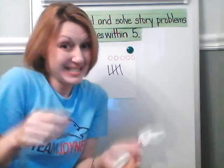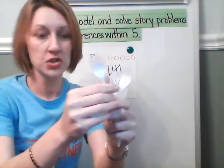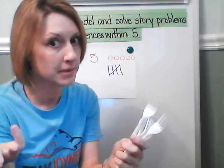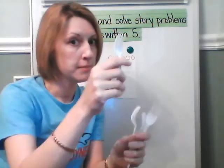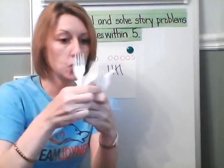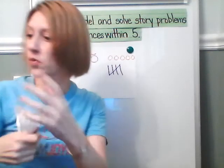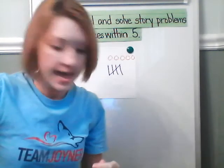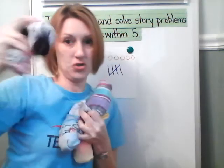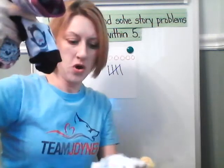Remember I said I collected straws and plastic ware? So I have plastic forks. Now you have to be really careful with this — maybe a plastic spoon might be a little safer for kindergartners. But plastic forks: one, two, three, four, five plastic forks. That could totally work. And I could use socks — one, two, three, four, five pairs of socks.